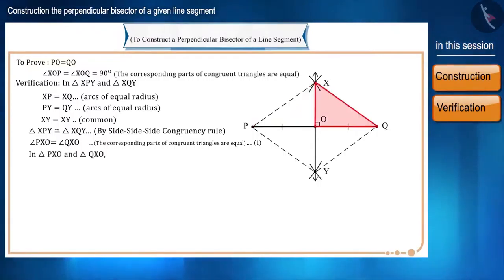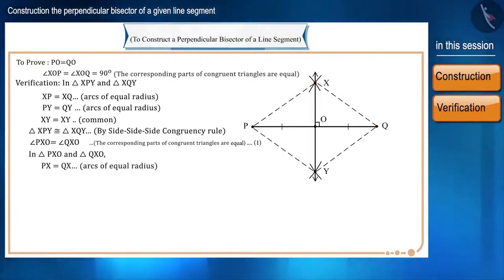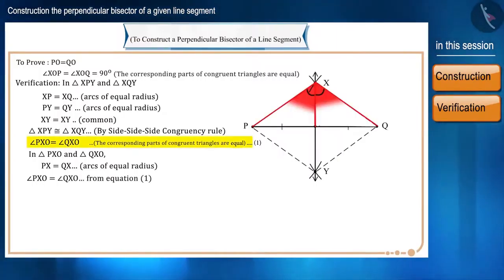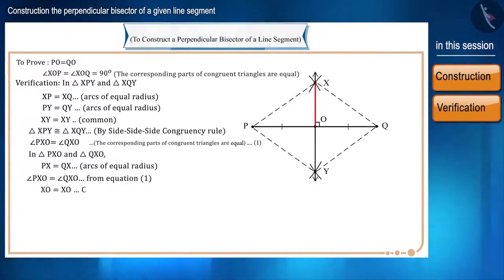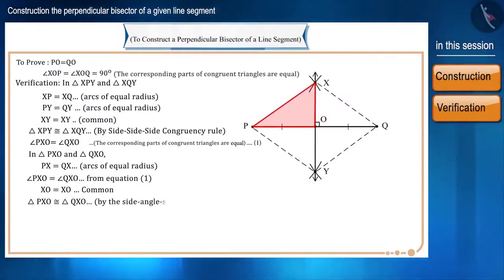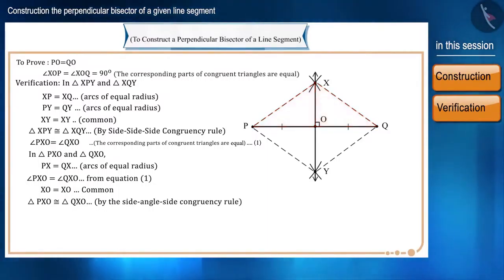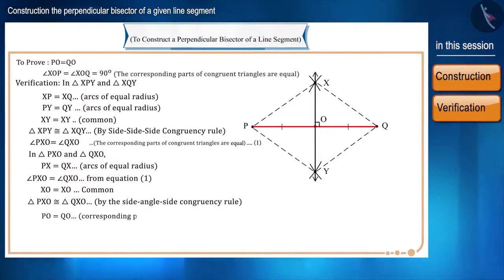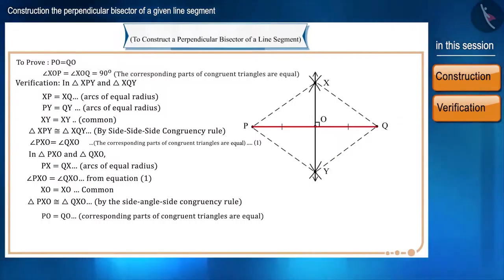Now, let's take triangle PXO and triangle QXO. Side PX is equal to side QX because these are arcs of equal radius. Angle PXO is equal to angle QXO by equation 1, and side XO is a common side. Therefore, triangle PXO and triangle QXO are congruent by the side-angle-side congruency rule. Therefore, side PO is equal to side QO, as corresponding parts of congruent triangles are equal. That is, point O bisects the line segment PQ.